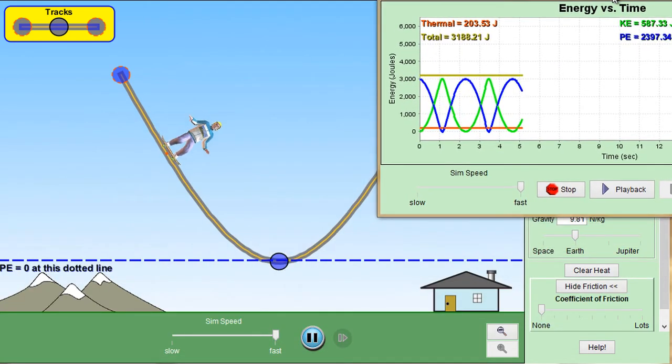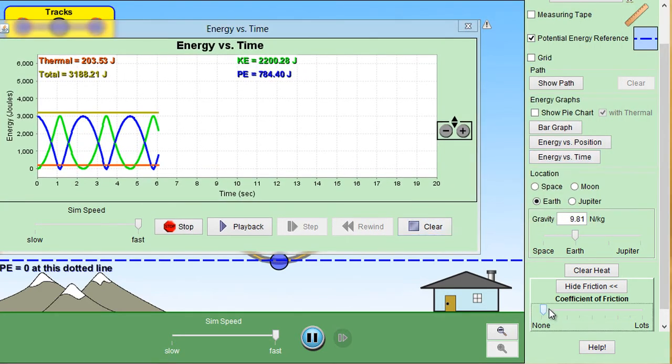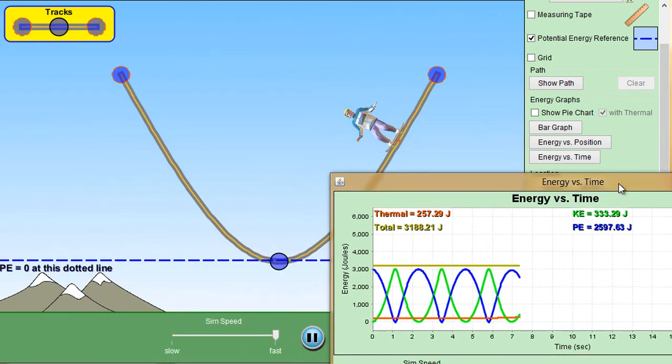And now we're going to introduce some friction. Add in a little bit of friction here. And let's see what's happening with our skater.